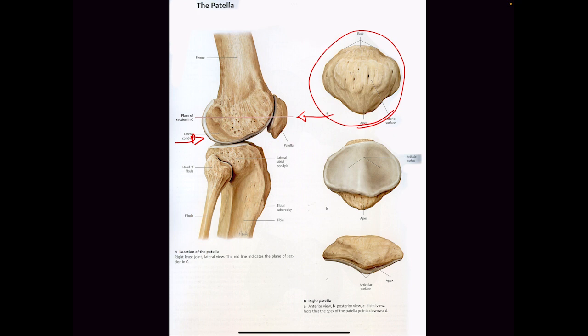The patella is the divot point between the femur and the tibia — the center point. Now looking at the patella, does it connect to anything? No. The patella is what we call a sesamoid bone. The patella is the biggest sesamoid bone in your body.